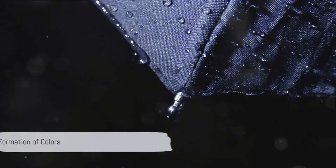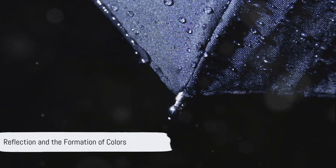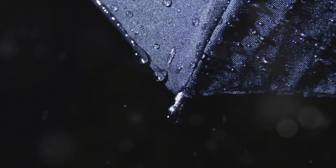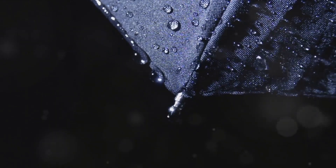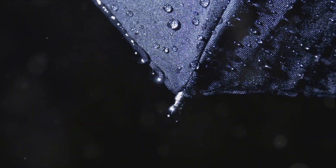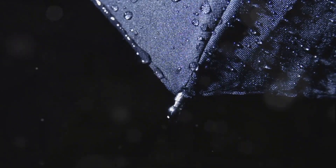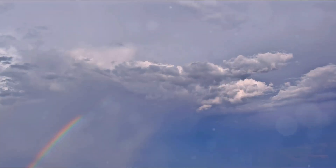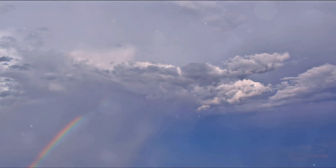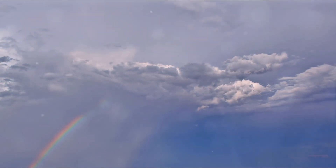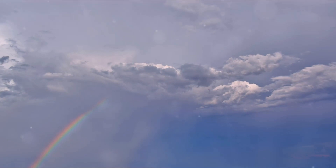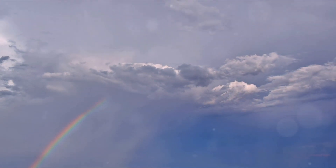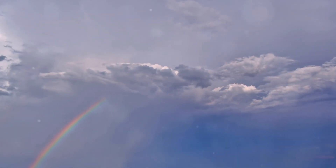These colors then bounce off the inside of the raindrop and head back towards the surface of the drop, where they exit and continue on their journey to your eyes. This is called reflection. The red light is refracted less than the violet light, but due to the reflection of light rays from the other side of the drop, the red appears on the outside of the rainbow, while violet is on the inside.